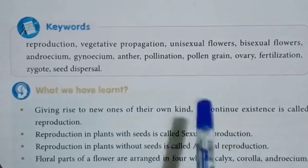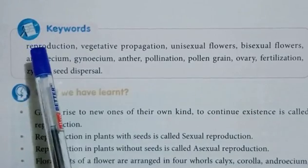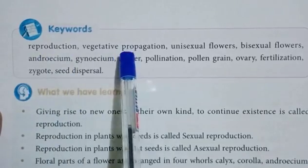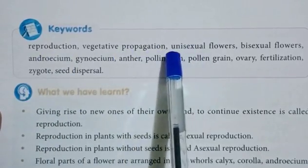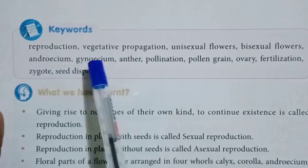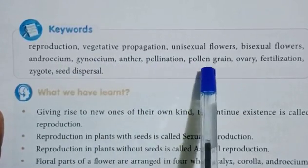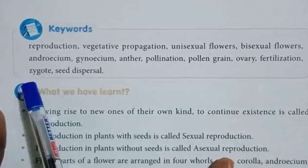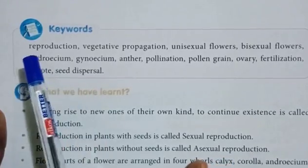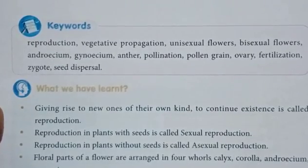Before going to the lesson, we will understand the keywords: reproduction, vegetative propagation, unisexual flowers, bisexual flowers, androsium, gynoseum, pollination, pollen grain, ovary, fertilization, zygote, and seed dispersal.